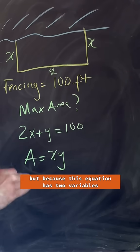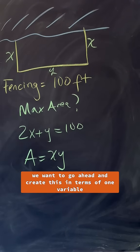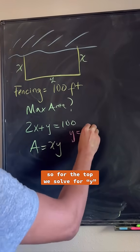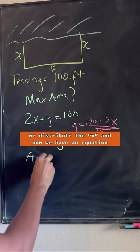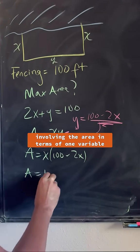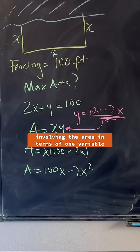But because this equation has two variables, we want to go ahead and create this in terms of one variable. So for the top we solve for y, so we substitute that value in for the y, we distribute the x, and now we have an equation involving the area in terms of one variable.